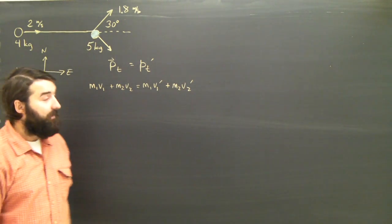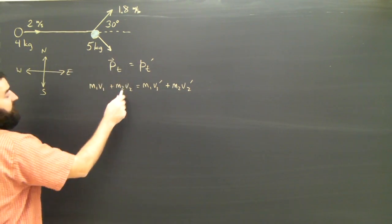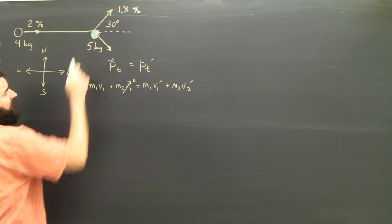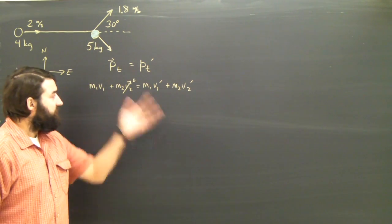Which sounds complicated, but it's not really very difficult. V2 is zero. The second object is at rest when the collision occurs, so this guy is gone.